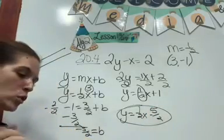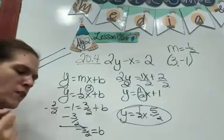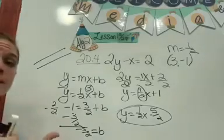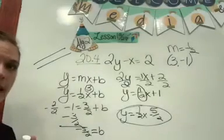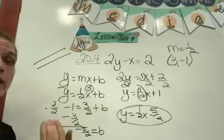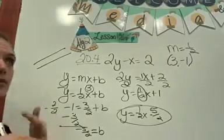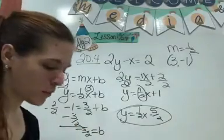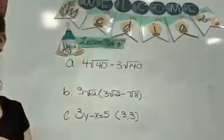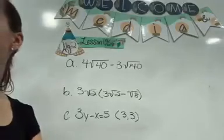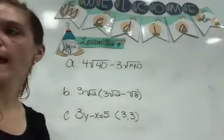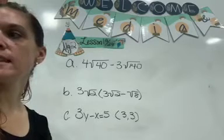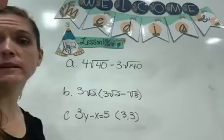So the equation of your line is going to be y equals one half x minus 5 over 2. And there you go. If you're not confident in converting whole numbers into fractions and that kind of thing, let me know so I can help you on that part. Now let's do the practice. Your answers are: a is 8 square root of 10 minus 6 square root of 35, b is 6, and y equals one third x plus 2.